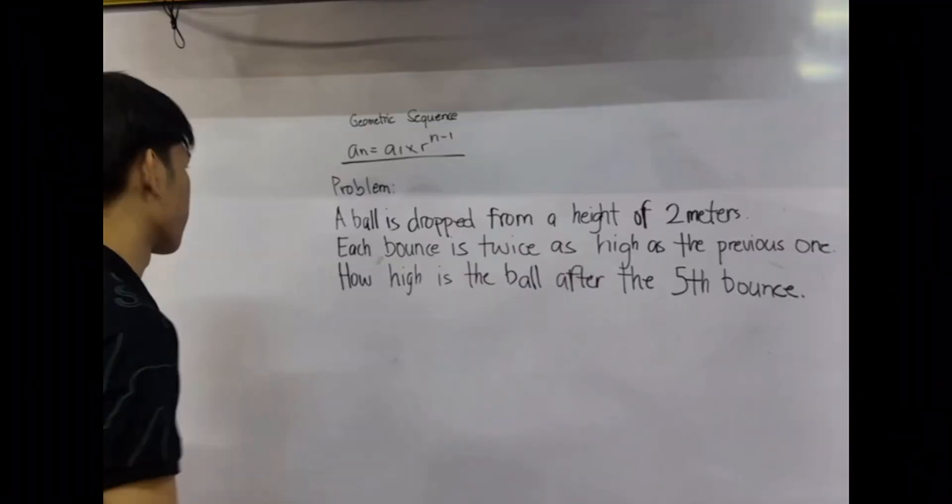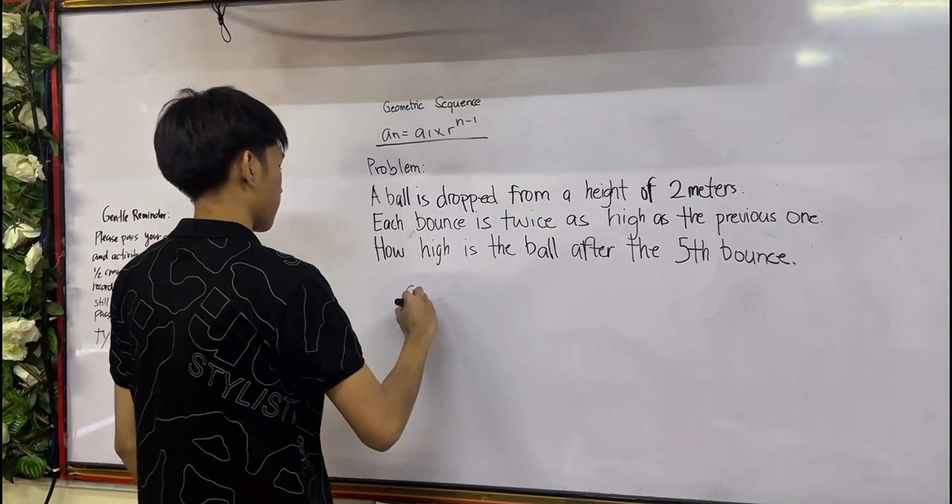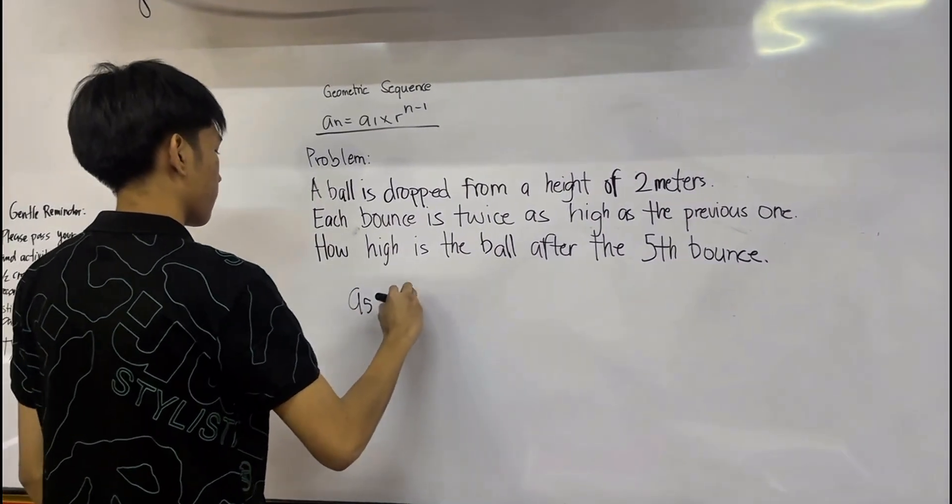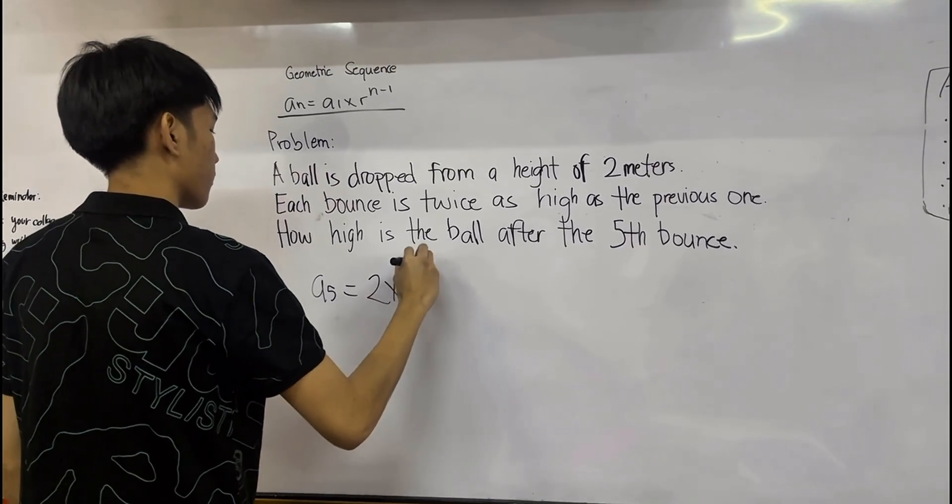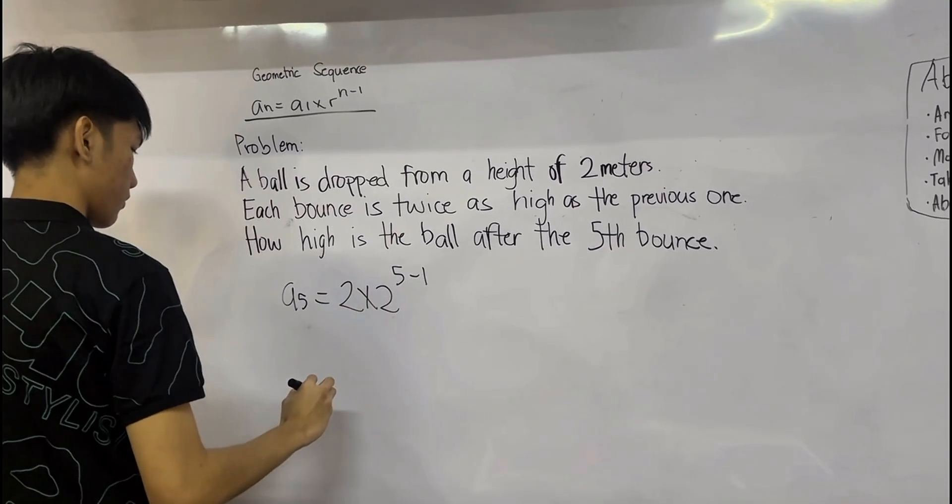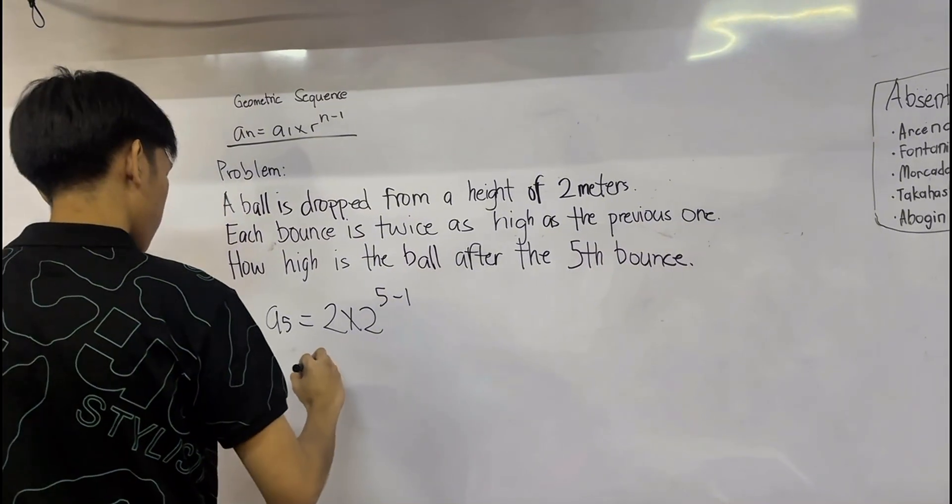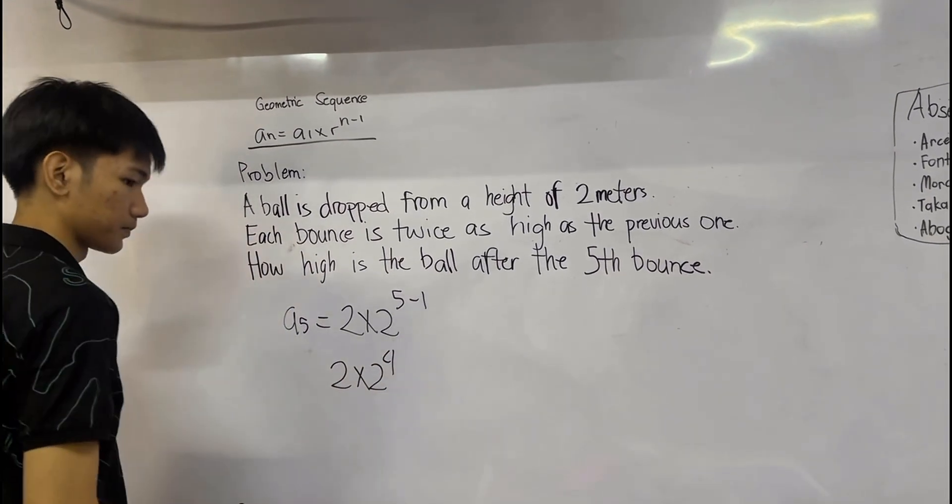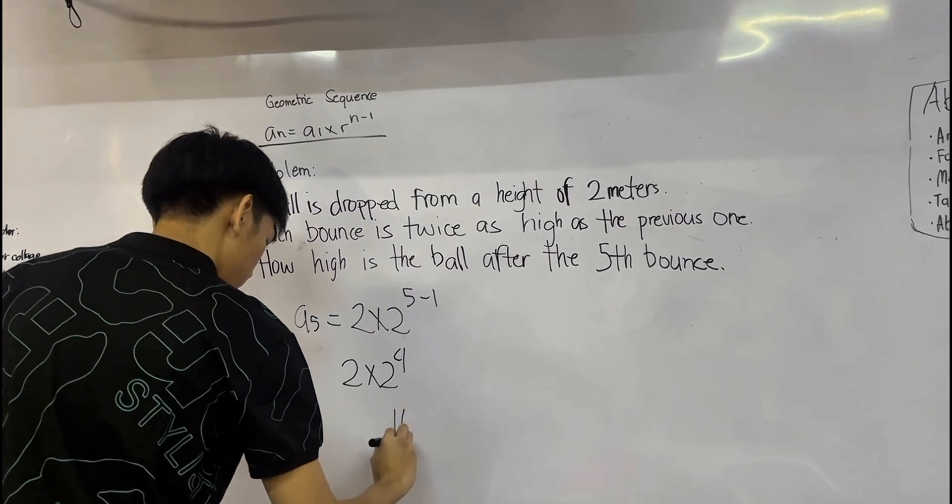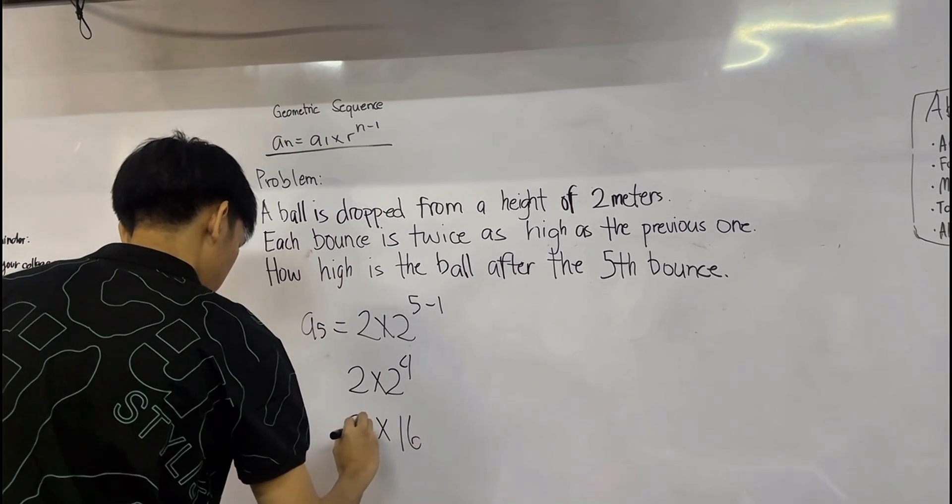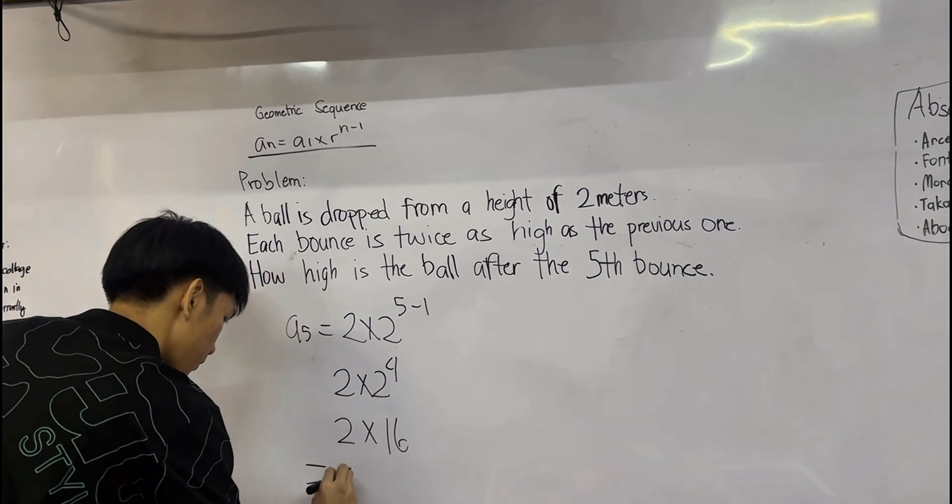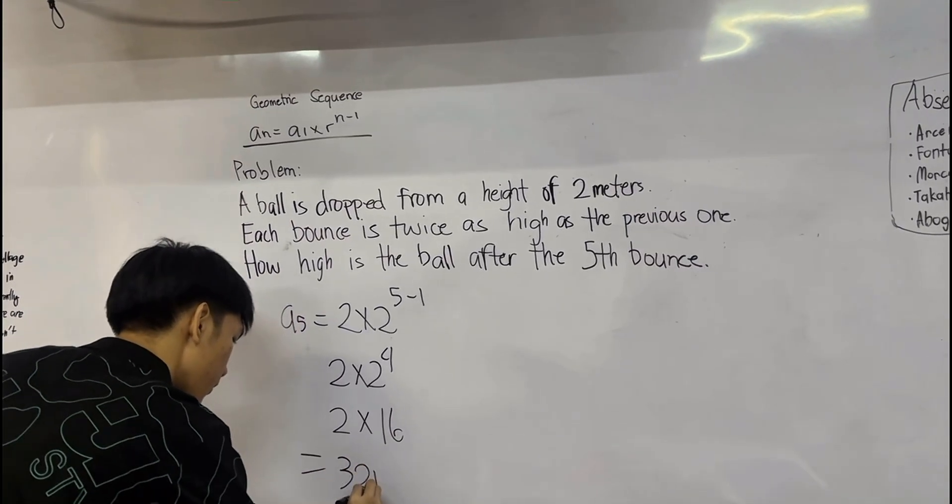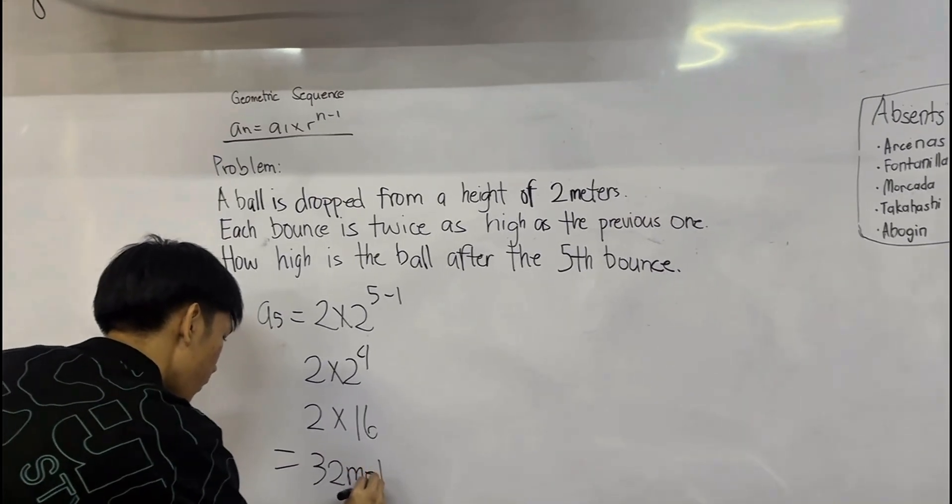So for the formula, it is a sub n equals a sub 1 times R (the ratio) raised to the power of n-term minus 1. Now let's solve: a sub 5 is equal to 2 multiplied by 2 raised to the power of 5 minus 1. According to PEMDAS, we solve the exponent first. 5 minus 1 is equal to 4. Now it becomes 2 multiplied by 2 raised to the power of 4. 2 to the power of 4 equals 16. Then we multiply 2 by 16 which is 32. That means the ball will bounce 32 meters high on the fifth bounce.